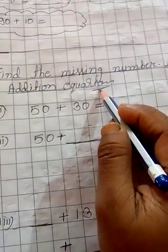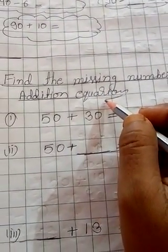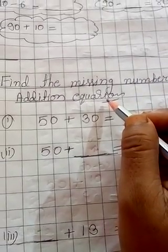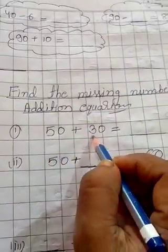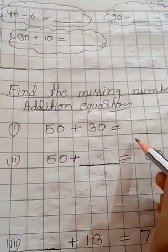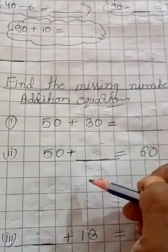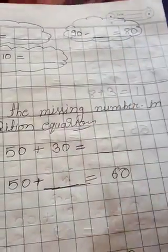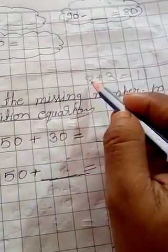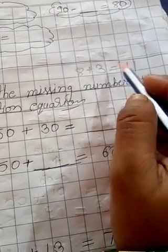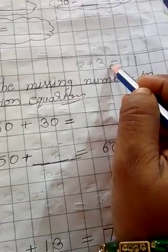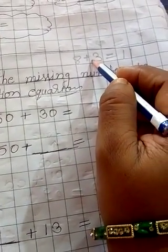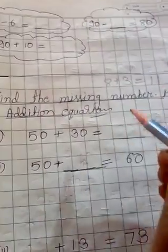First, let us understand what is an equation. An equation is simply a statement that has two equal sides, separated by an equal sign. Just like here: 8 plus 3 is equal to 11 — this is an equation. We call that statement an equation which has an equal sign in the middle, and it has a left hand side and a right hand side, and both are equal.